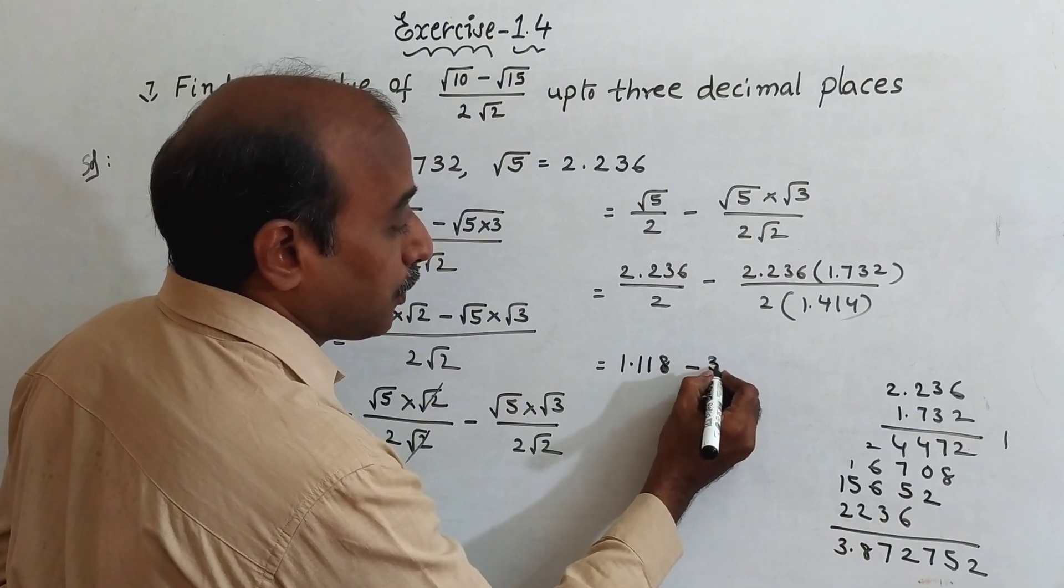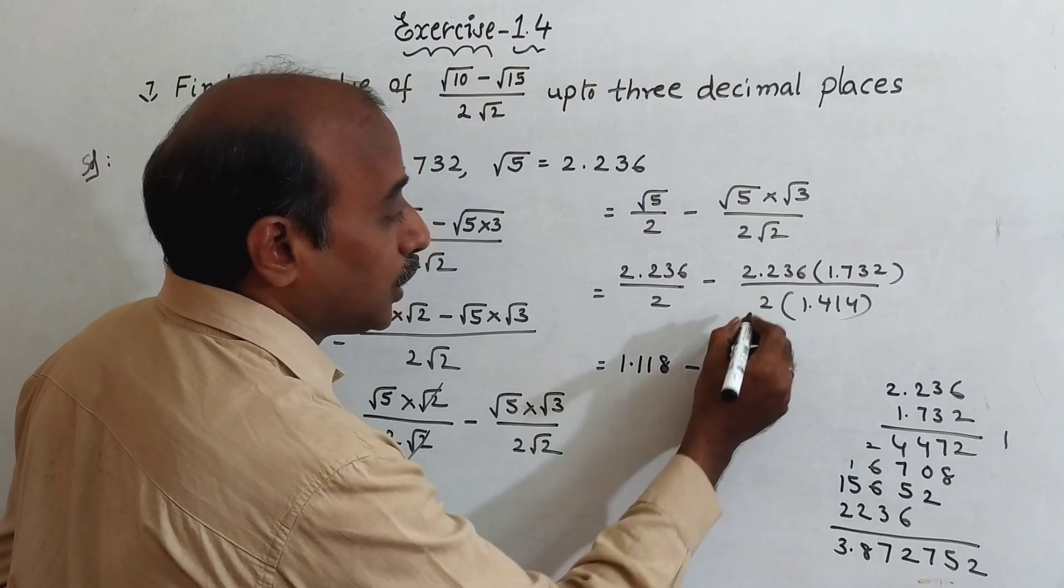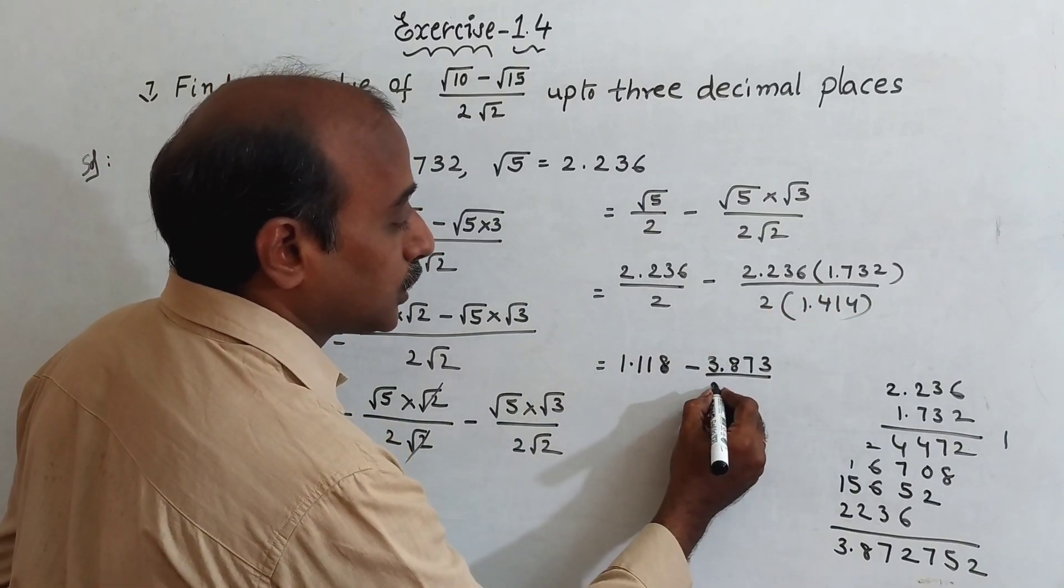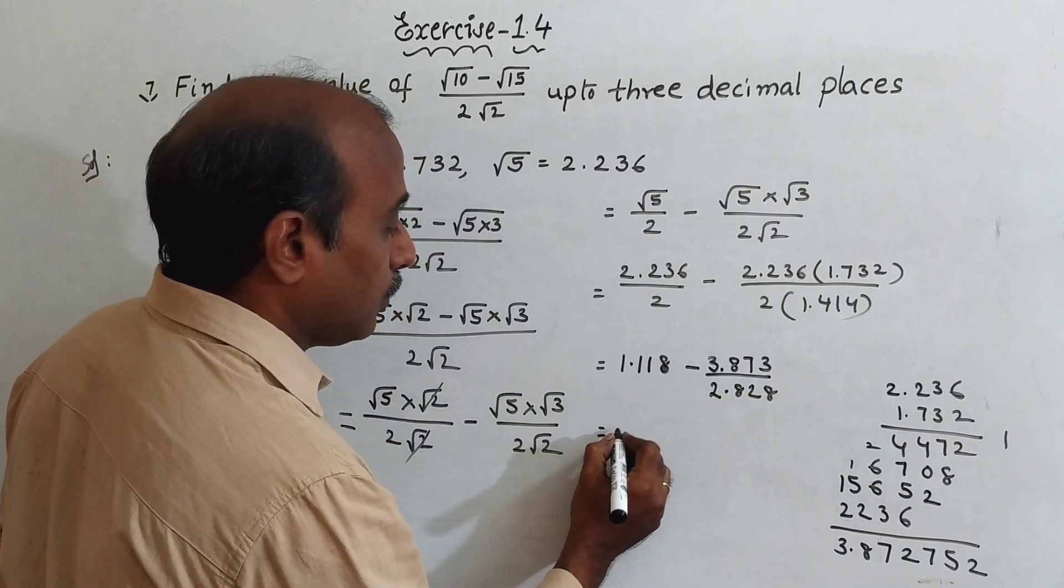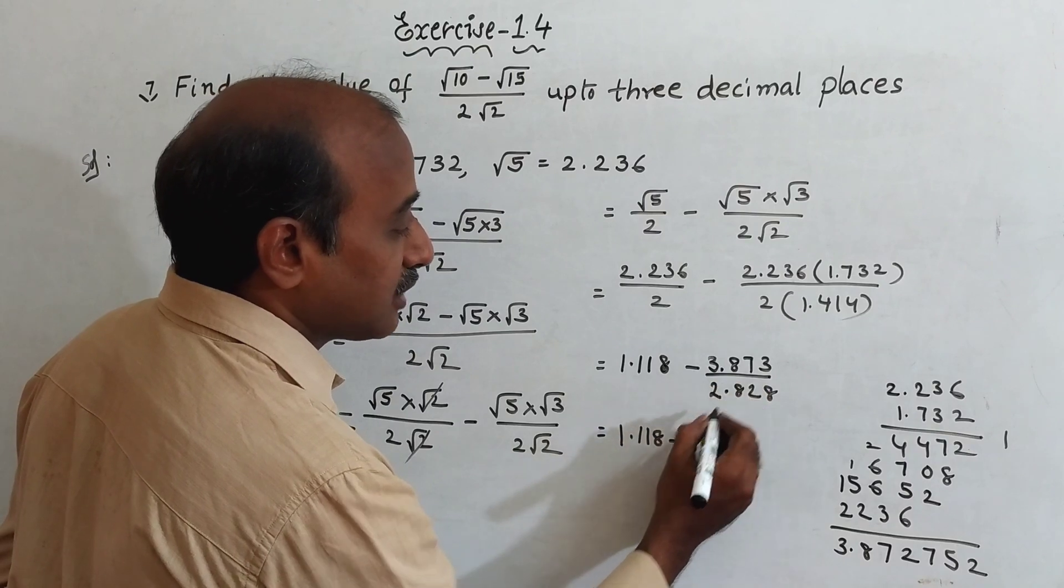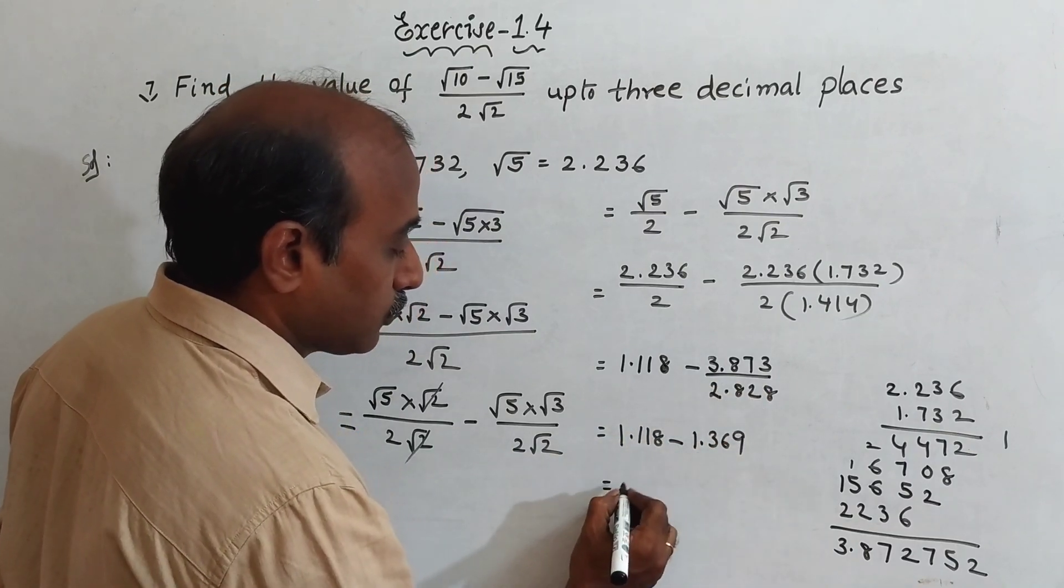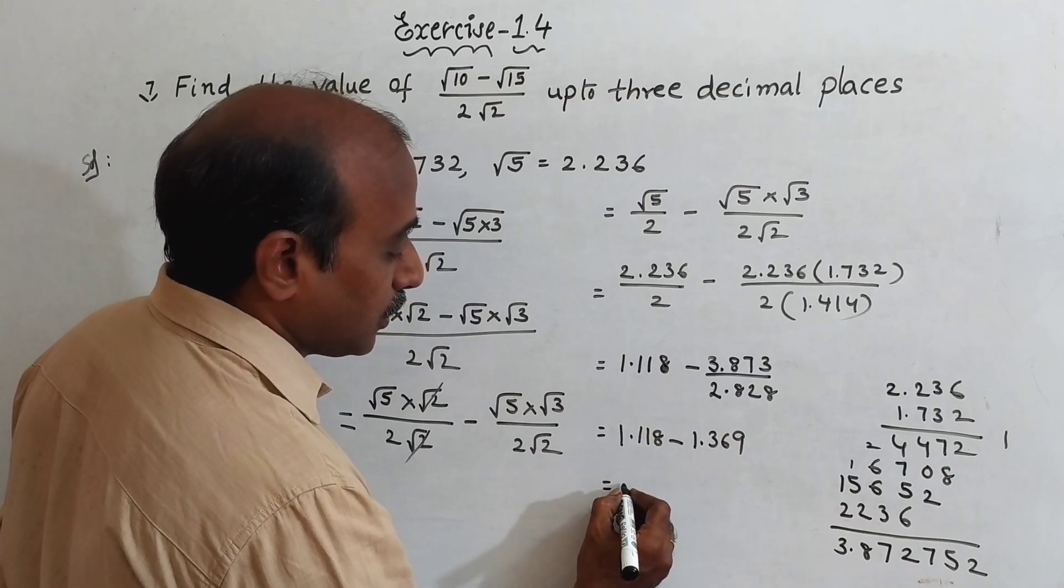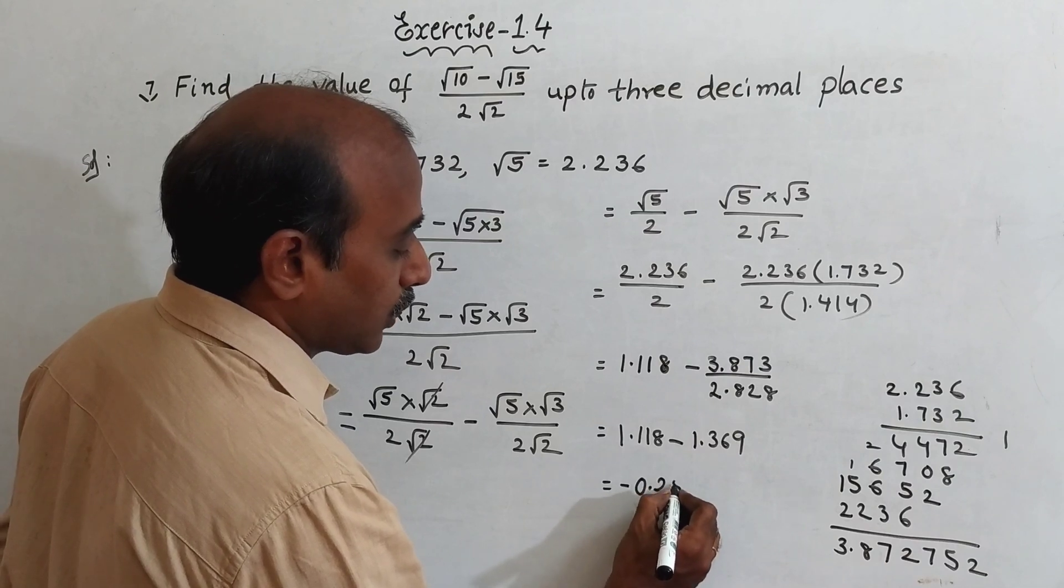3.873 by 2 into 1.414, which is 2.828. Now 1.118 minus, you have to cancel, you will get 1.369. Now you have to subtract, this is 0.251.